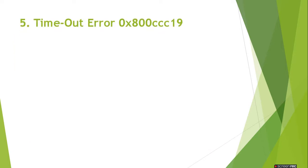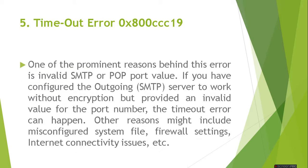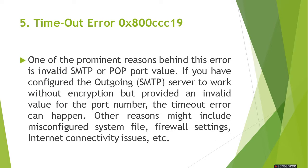Our fifth reported error is the timeout error. The code for this error is 0x800ccc19. One of the prominent reasons behind this error is an invalid SMTP or POP port value. If you have configured the outgoing SMTP server to work without encryption but provided an invalid value for the port number, the timeout error can occur. Other reasons include misconfigured system files, firewall settings, and internet connectivity issues.